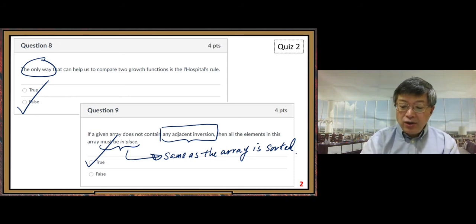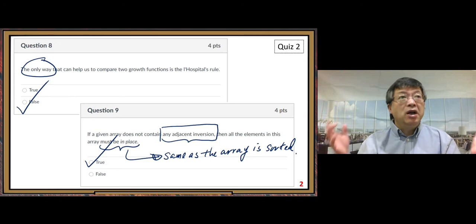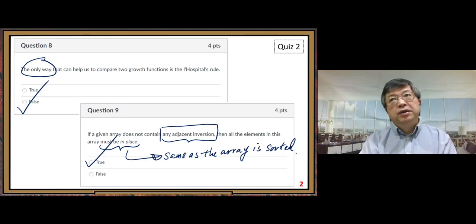If I say if the array is ordered or sorted, then probably it's better for you to get a correct answer. But if I say all the elements in the array are in place, you are not quite familiar with that terminology. So that's possible.